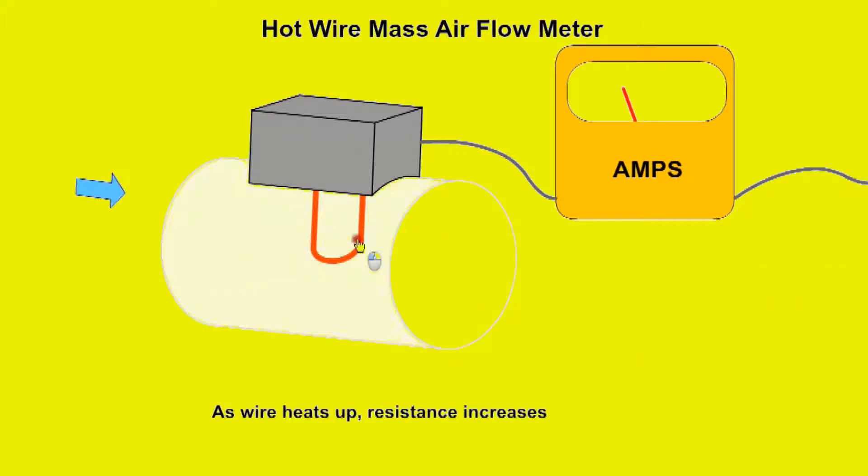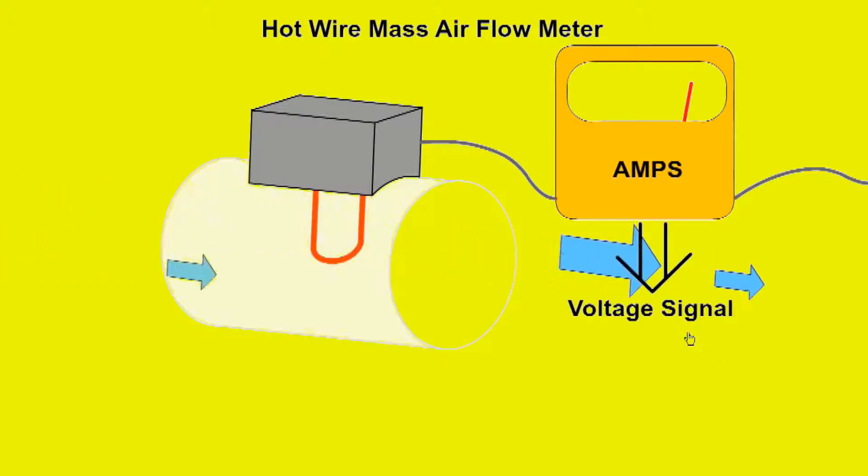An equilibrium point is reached between the heating effect of the wire and the cooling effect of the moving air. When more air flows over the wire, it is cooled. Resistance decreases, allowing additional current to flow until equilibrium is again achieved. The ECU uses the amount of electric current flowing to the heater to determine the mass of air flowing into the engine. It takes into account the temperature and density of the incoming air and additional correction factors are not required.